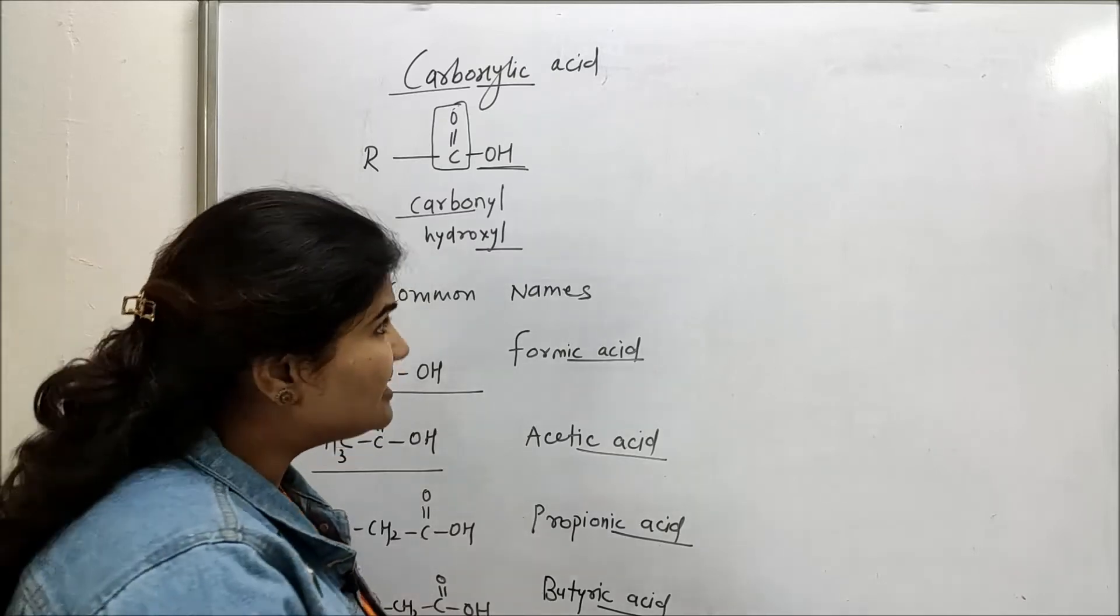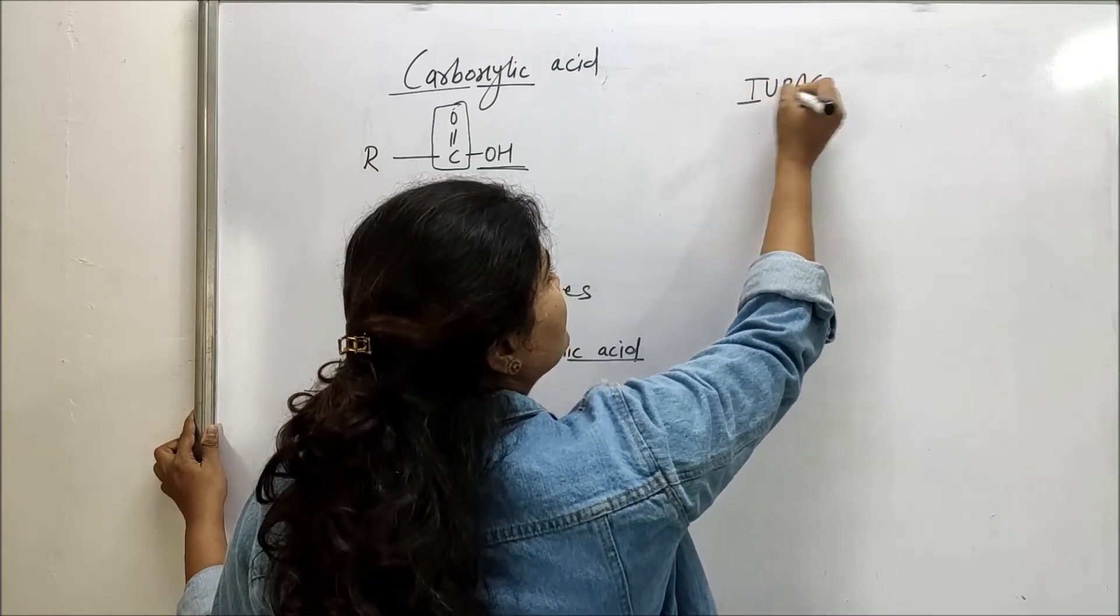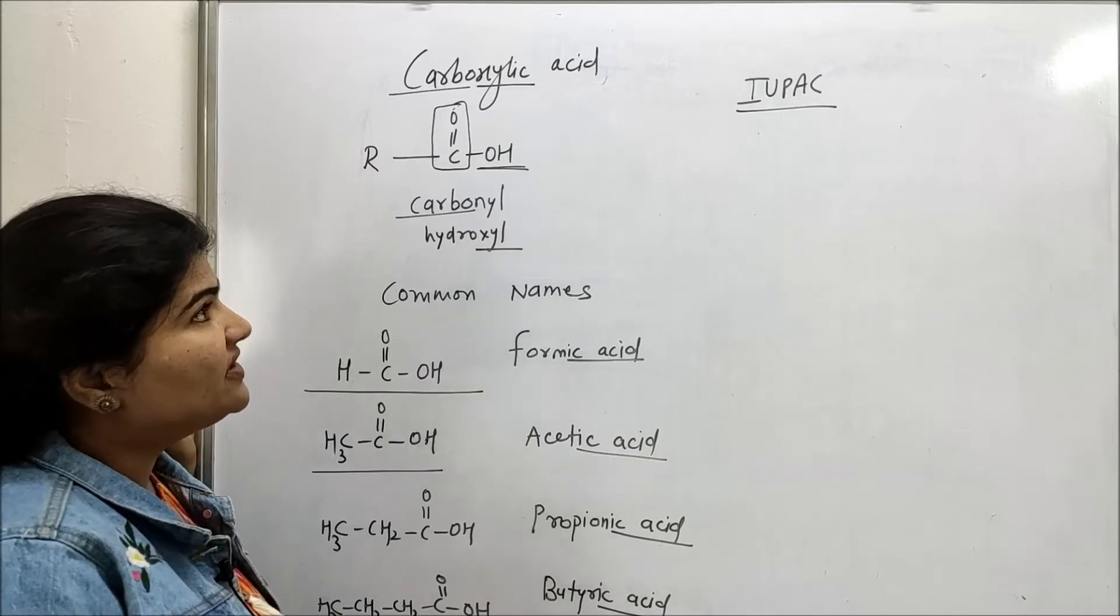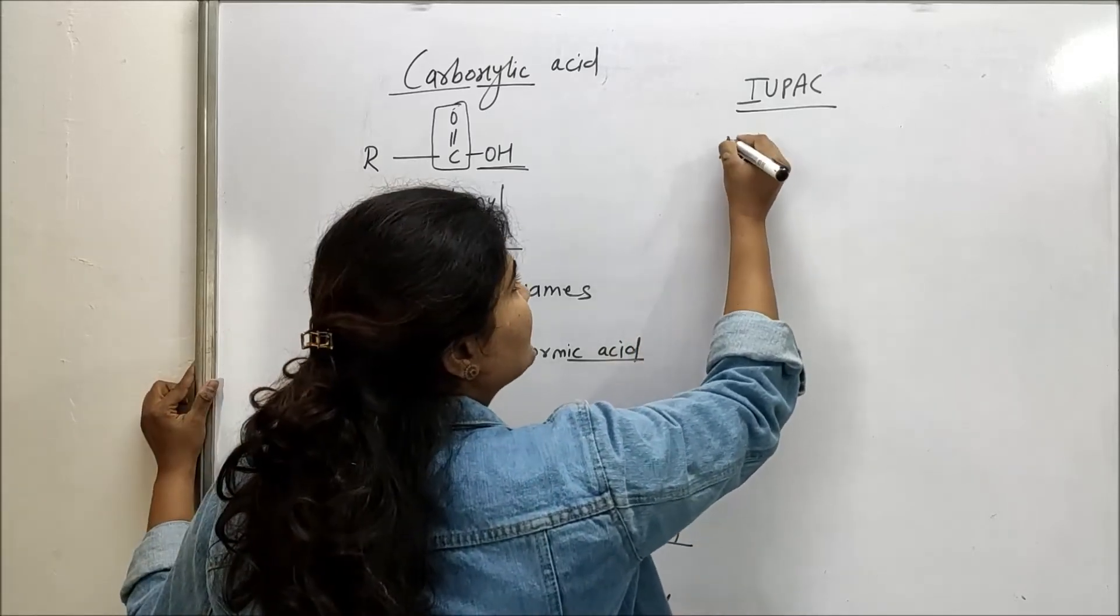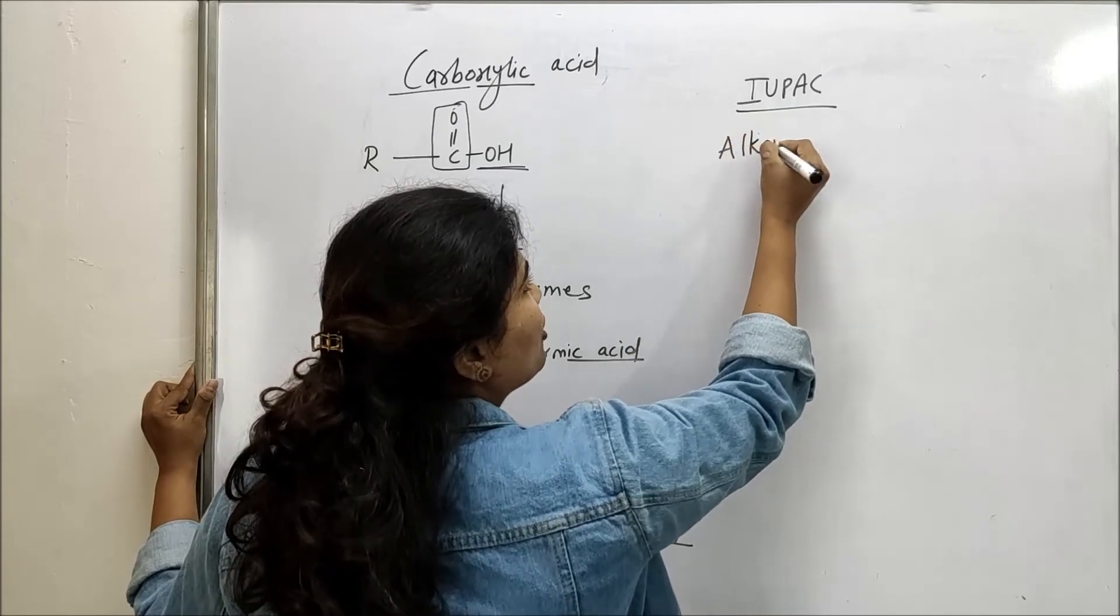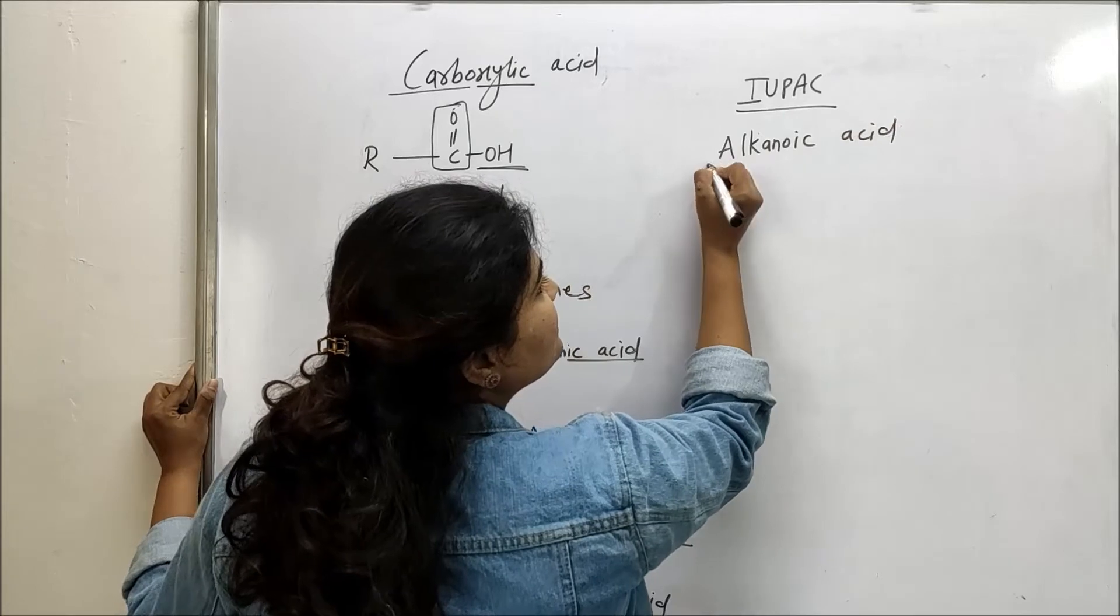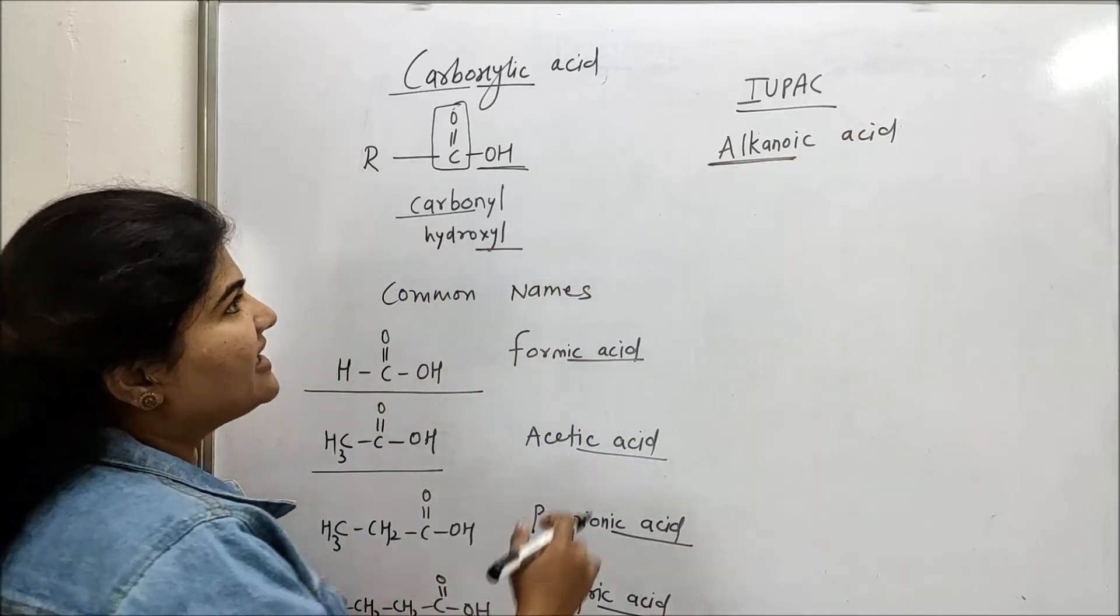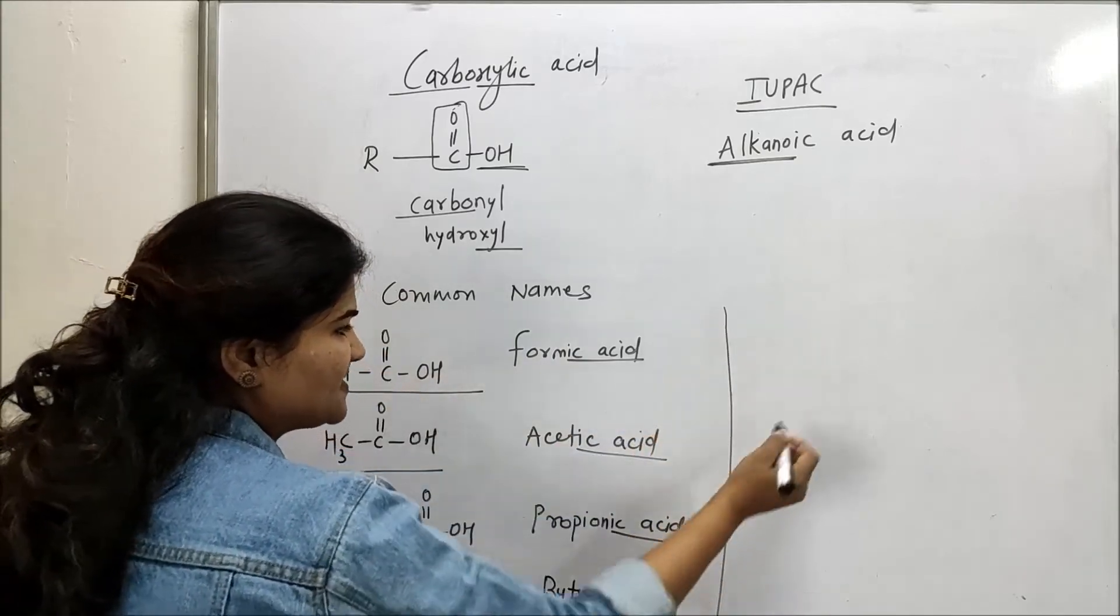So let's discuss how we are going to derive the names in IUPAC system for carboxylic acids. So what we are going to do is we are going to consider the names as alkanoic acids. So we will consider the parent alkane in this case. Now the parent alkane for this particular compound, I will write the IUPAC names here only.